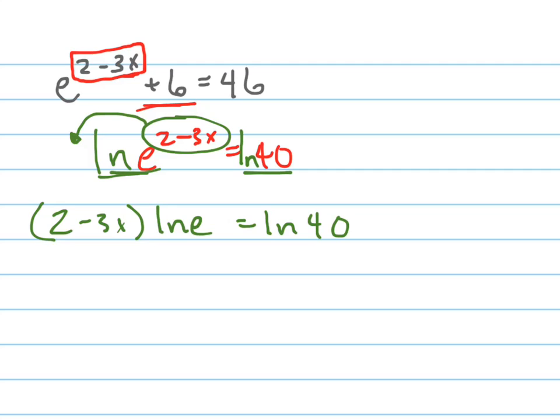And the natural log of e, if you remember, log base b of b equals 1, and that's what natural log is, it's the log base e. So the log base e of e just equals 1, so that goes away. And I just get 2 minus 3x equals the natural log of 40.